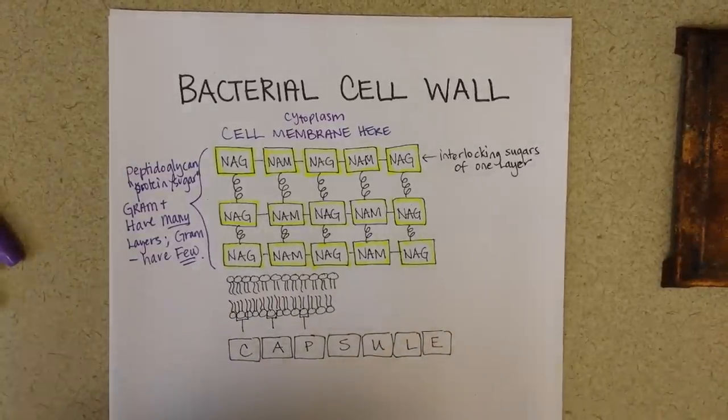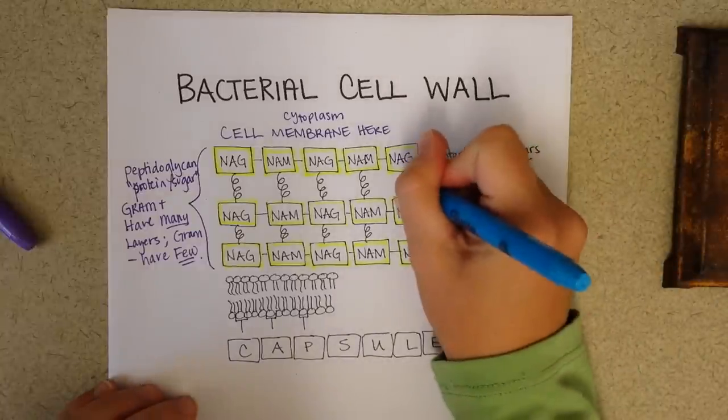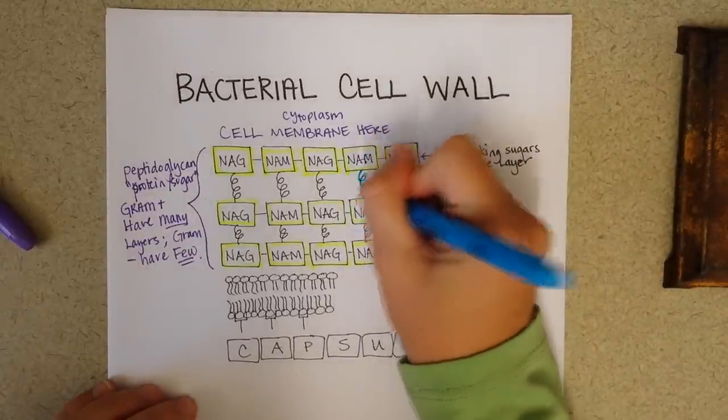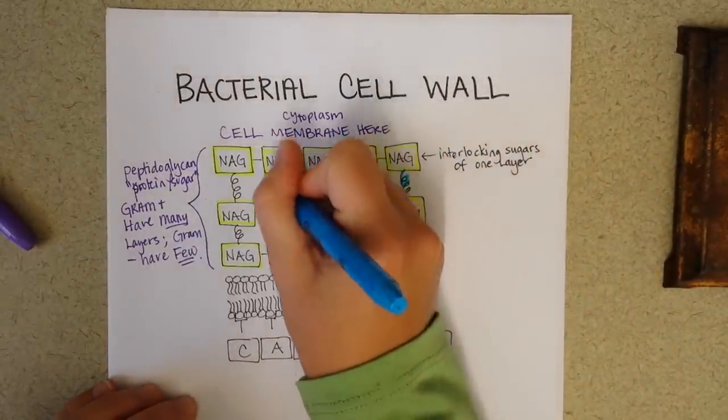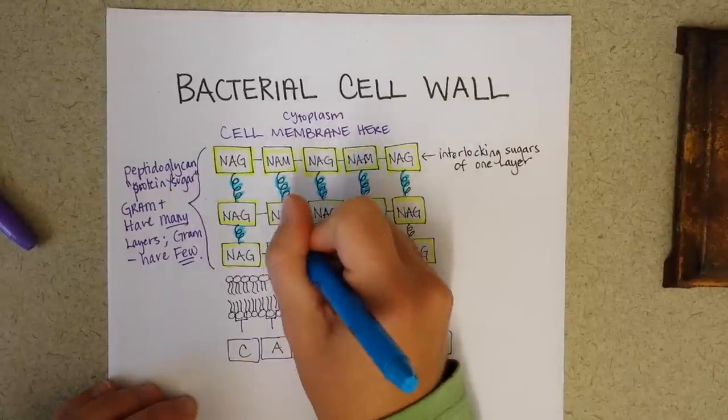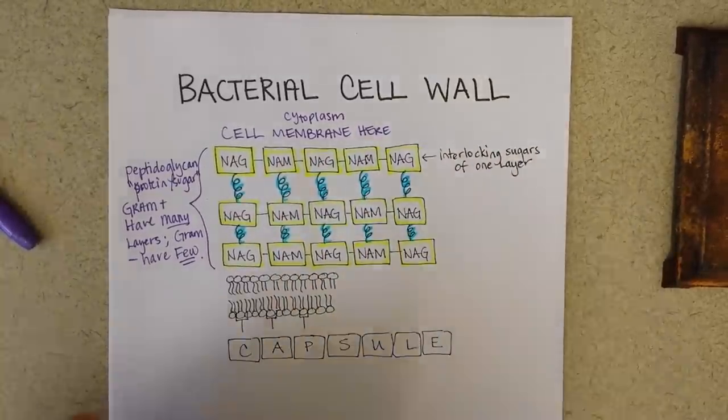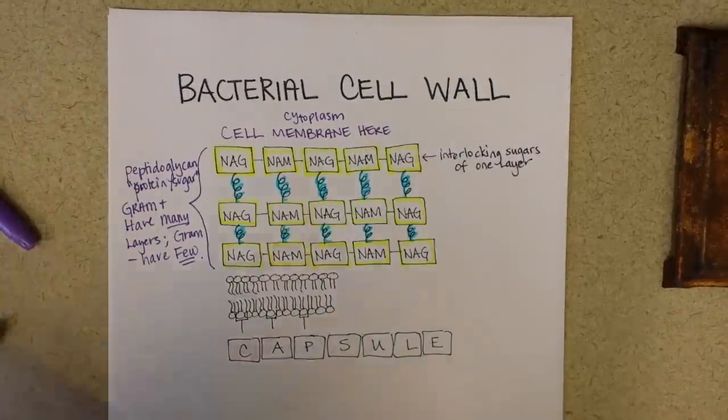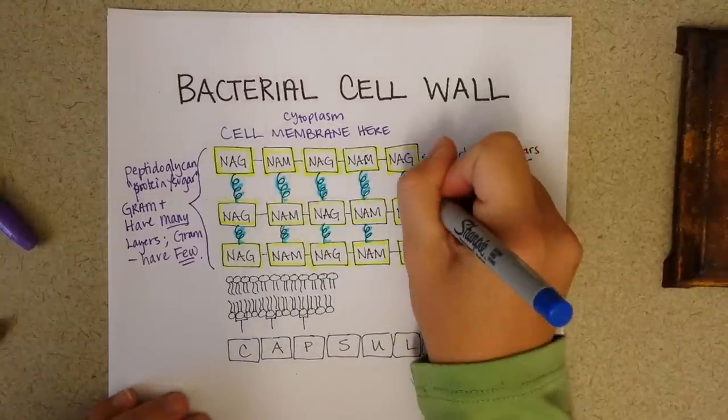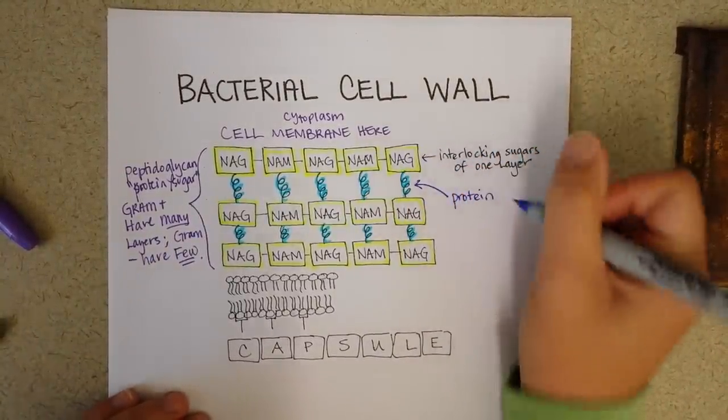And then what holds the layers together are protein crosslinks. So take a blue highlighter and connect those layers together. These are usually just a short chain of amino acids, maybe four or six amino acids long. Then use your blue pen to label these as the protein crosslinks. So that's the peptido part.